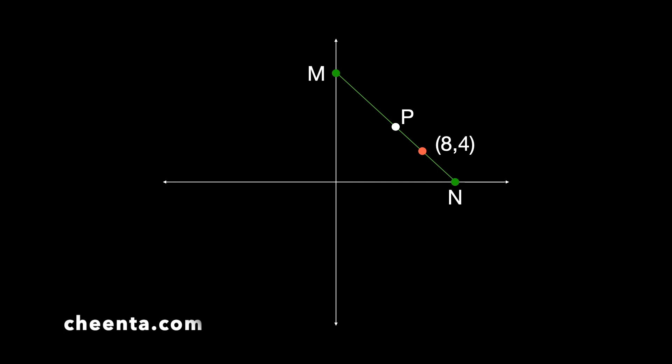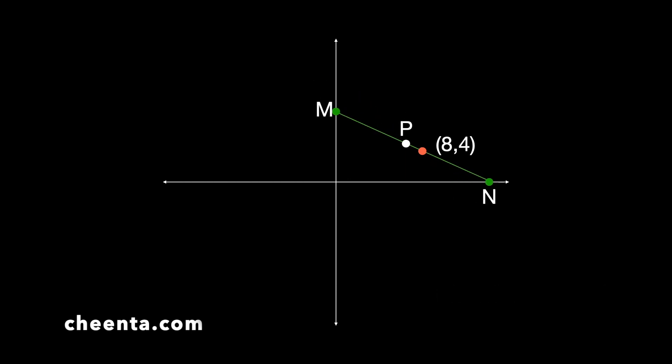Mark the midpoint P of the segment MN. This is all given data. Now we come to the goal: imagine that the line segment MN is moving and always passes through the point (8, 4). The question is — what will be the path traced out by the midpoint P? That is the locus of point P.